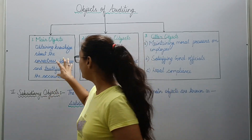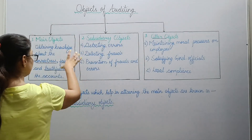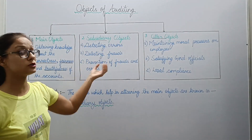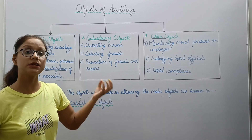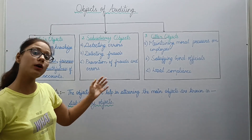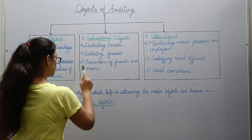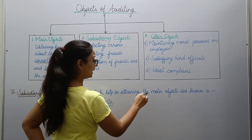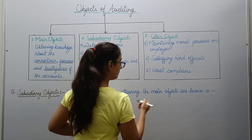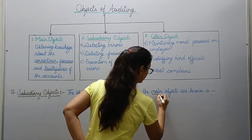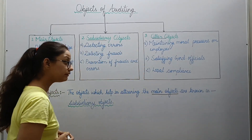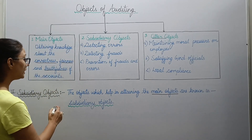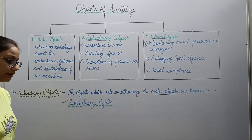To fulfill this objective, some secondary or subsidiary objectives are required. Subsidiary objectives are those objects which help in attaining the main object — the ones that help you achieve the main object are called subsidiary objectives.